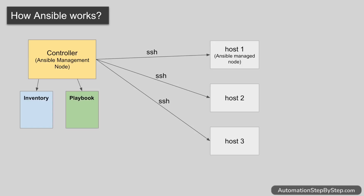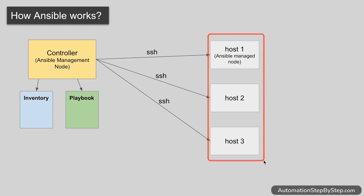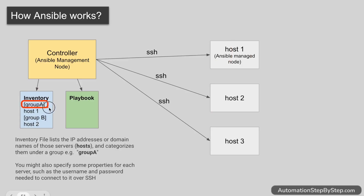On the controller machine where Ansible is installed, we create two files. The first file is called the inventory file. In this file we give information about the host systems — like their IP addresses and domain names, and how we connect to these systems. In the inventory file we can also create groups and put multiple hosts in a single group, which helps when you need to apply the same configuration on multiple machines.